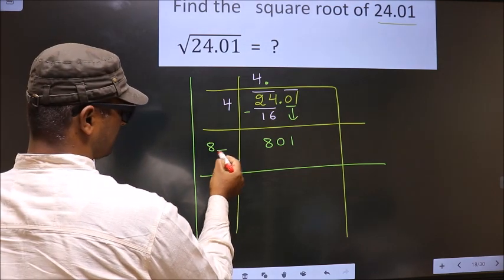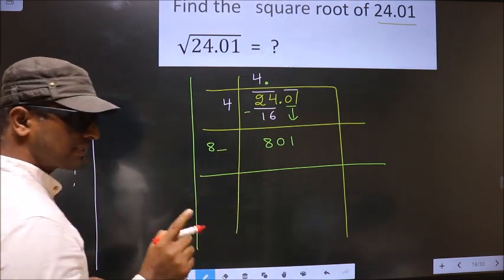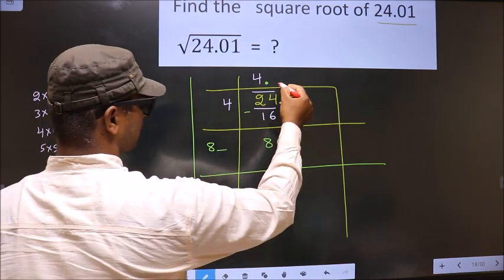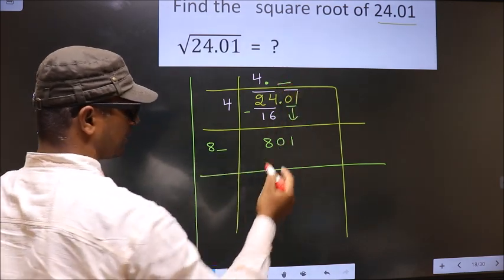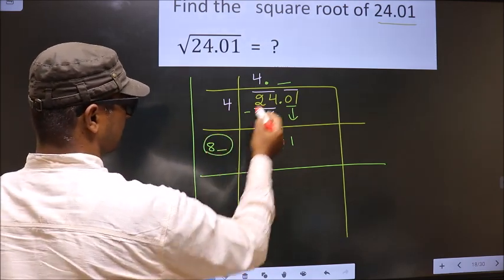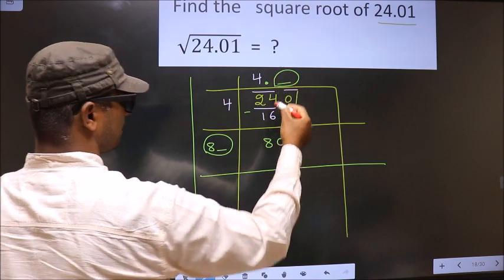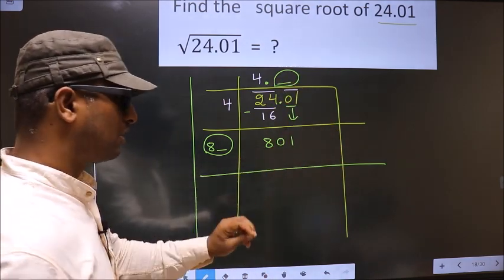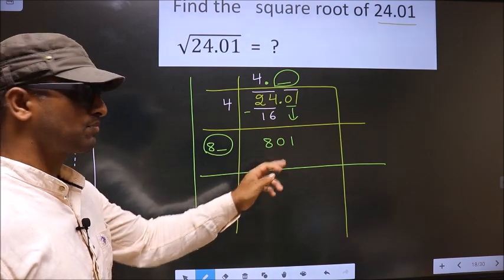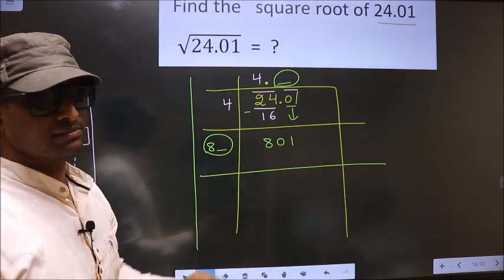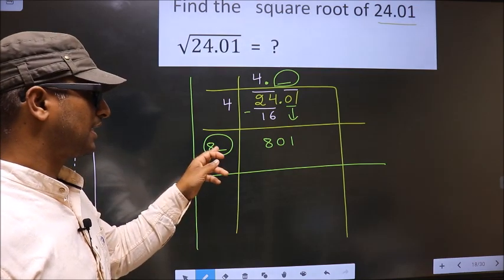Now here I should write a number. Condition is whatever number I write here, here also I should write the same number. And also when you multiply this number and this number, the resulting number should be smaller or equal to this. But that number should not be larger than this number. So let us find the number here.